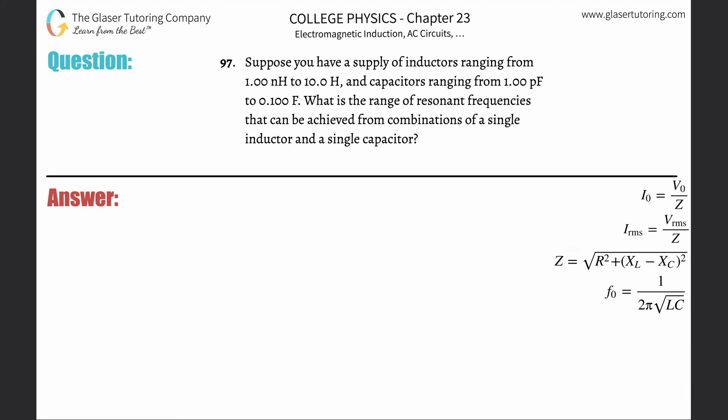Number 97: Suppose you have a supply of inductors ranging from 1 nanohenry to 10 henry and capacitors ranging from 1 picofarad to 0.1 farad. What is the range of resonant frequencies that can be achieved from combinations of a single inductor and single capacitor?